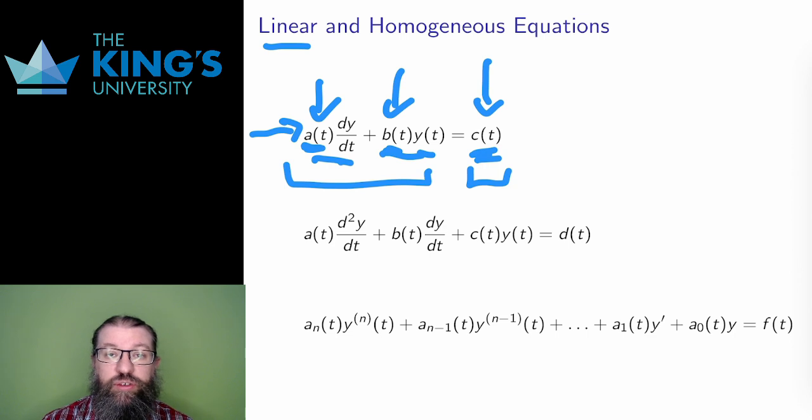A second-order linear equation is similar, but now with a second derivative as well. Again, all the terms on the left have a coefficient function, a of t, b of t, and c of t, and there is another function, d of t, on the right. All the terms are added together in the linear structure. And this could be extended to any order.